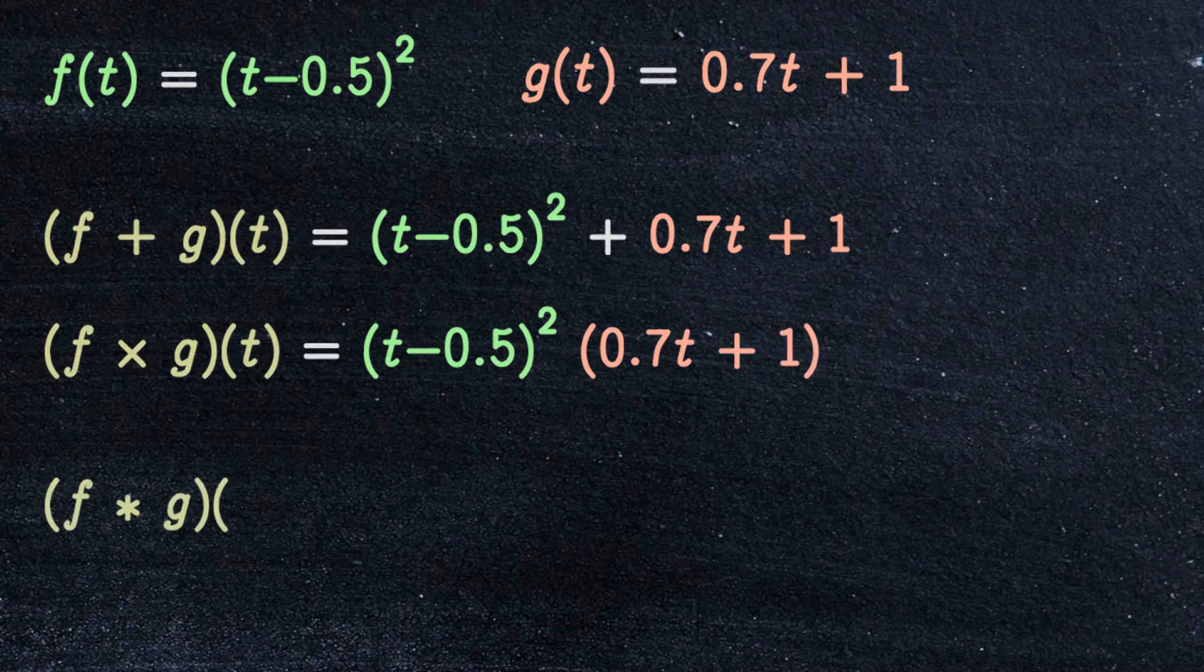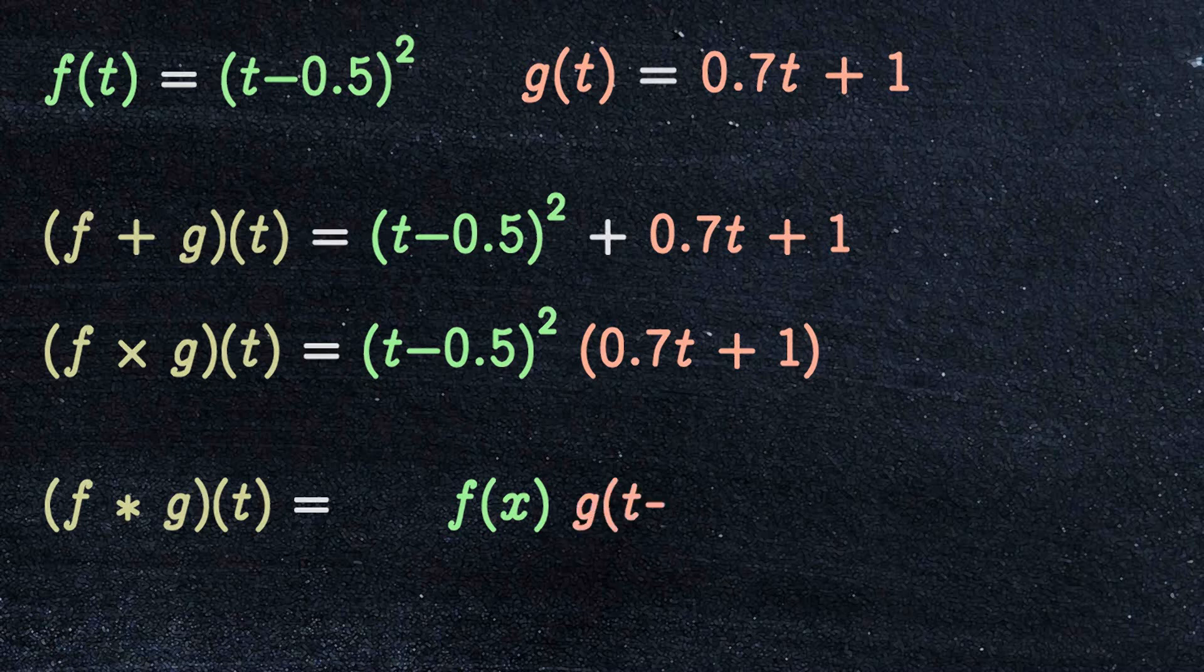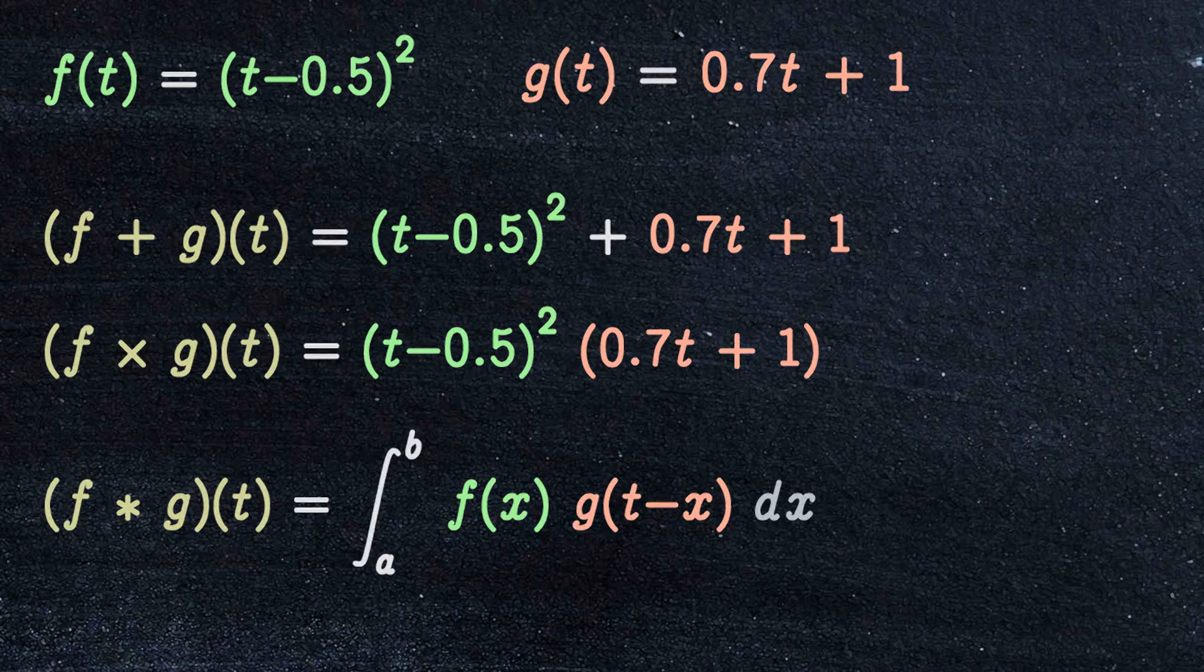And the convolution of f and g is defined as follows. Multiply the function f of x with the function g of t minus x, and take the integral of this product with respect to x.